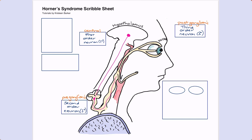The second order neuron leaves the spinal cord at T1 and travels up the neck to a little autonomic nervous system hub called the superior cervical ganglion. This is a little place where sympathetic fibers pass on the message to other sympathetic fibers which go forth into the face. You'll notice that this ganglion where the second and third order neurons meet is right next to the carotid artery — take that in.